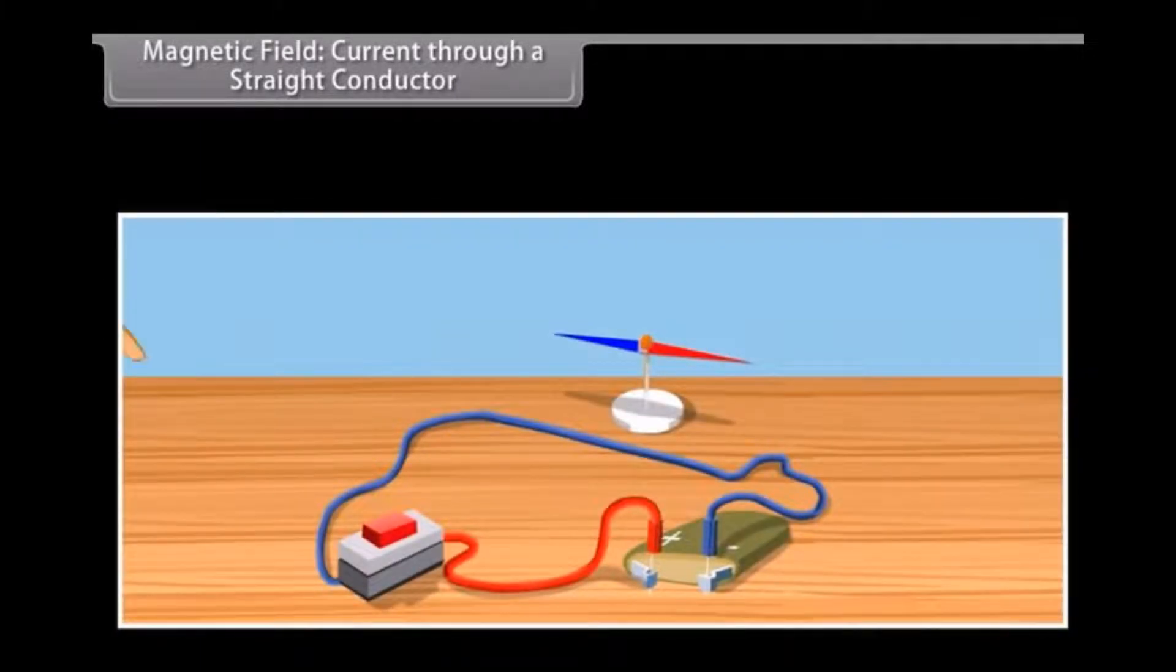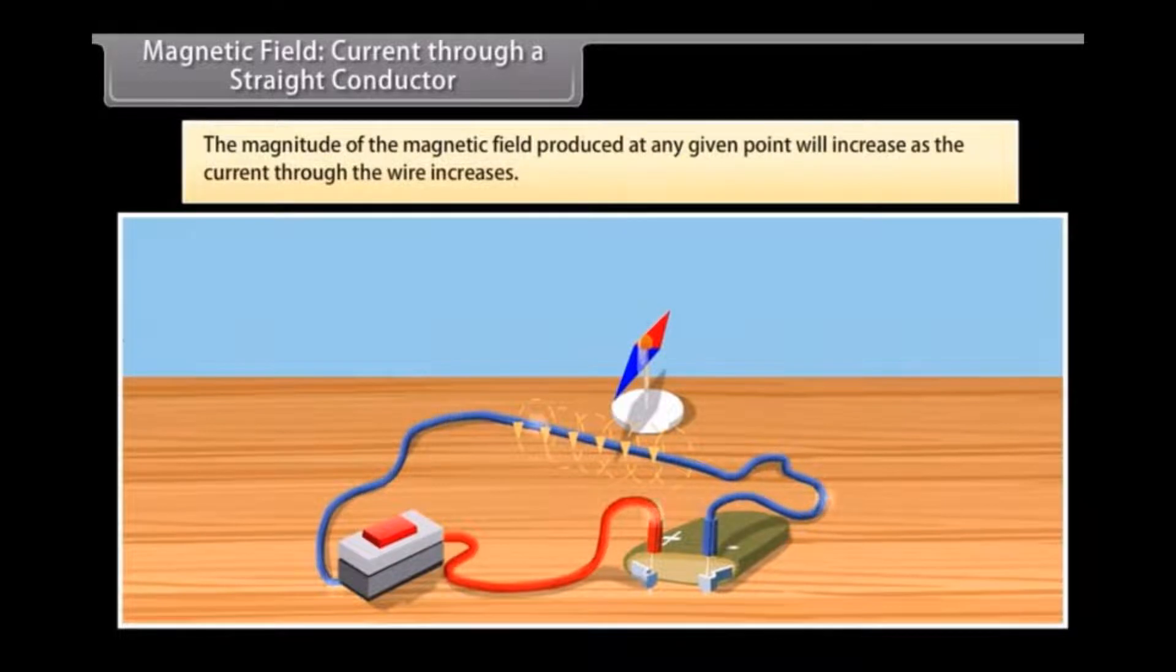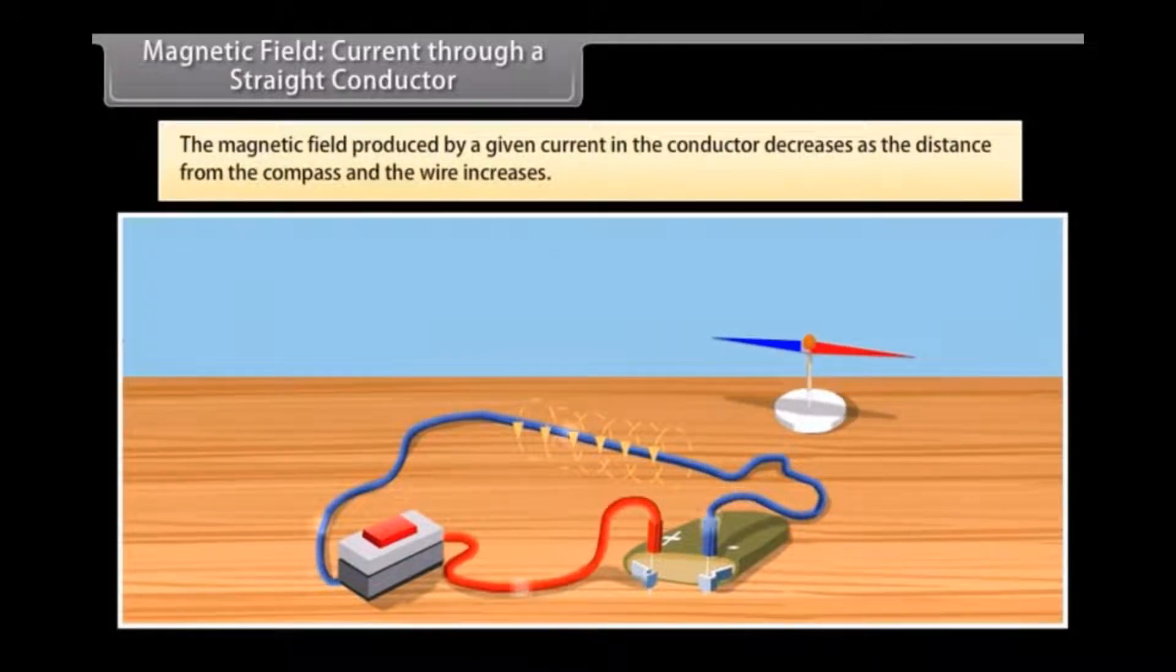Magnetic field. Current through a straight conductor. As you have seen earlier, let us see what happens when we change the current that is passing through the wire. The effect on the compass also varies. So, if you increase the current, the deflection of the needle of compass will increase. From this we know that the magnitude of the magnetic field produced at any given point will increase as the current through the wire increases. Now, try moving the compass away from the current passing through the wire. You will see that the magnetic field produced by a given current in the conductor decreases as the distance from the compass and the wire increases.